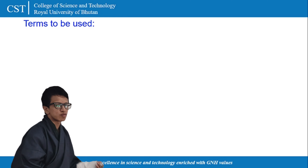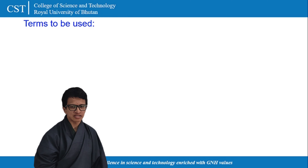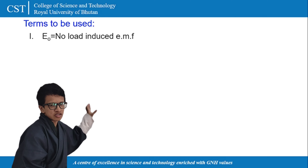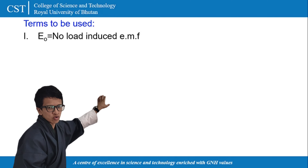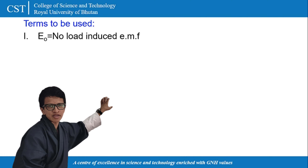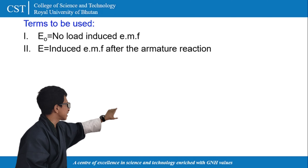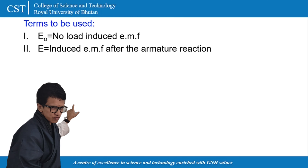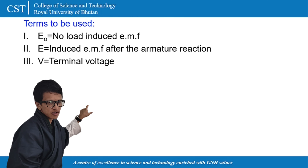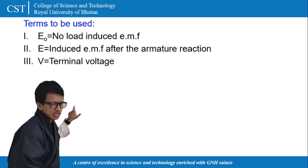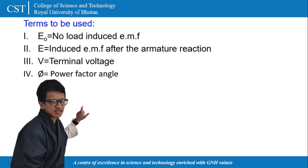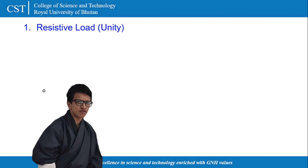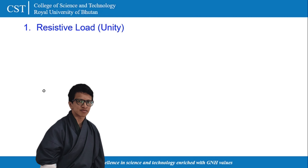The terms that will be used in this video are: E, that is the no-load induced EMF after armature reaction; V, that is the terminal voltage; and V, that is the power factor element — also referred to after armature reaction as the power factor element V.